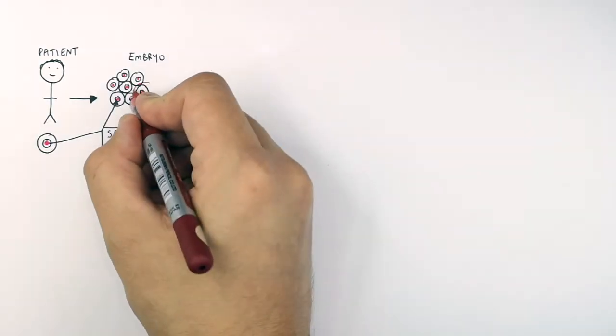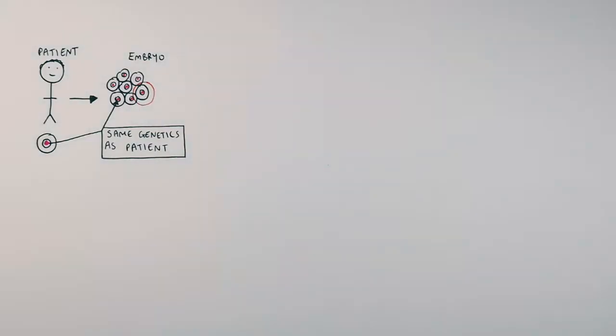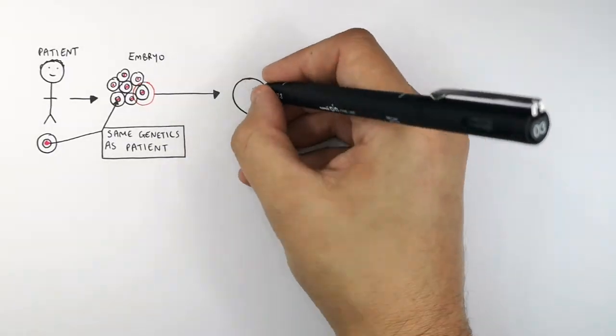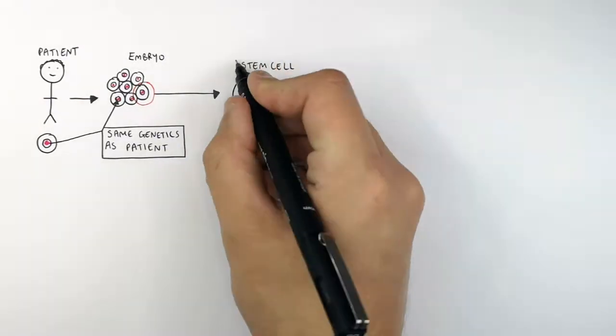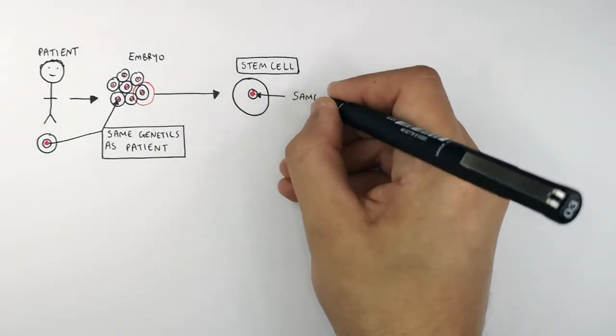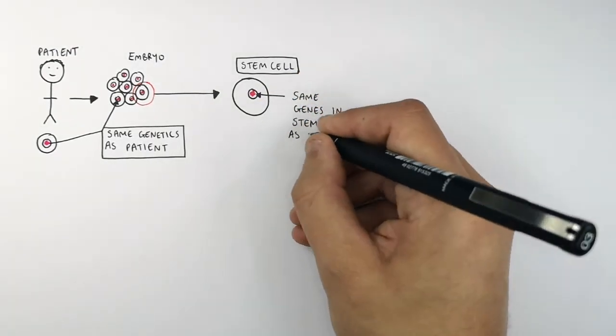So you now take one of those cells from the embryo and that is now an embryonic stem cell. This is an embryonic stem cell with the same genes in the stem cell as the patient.